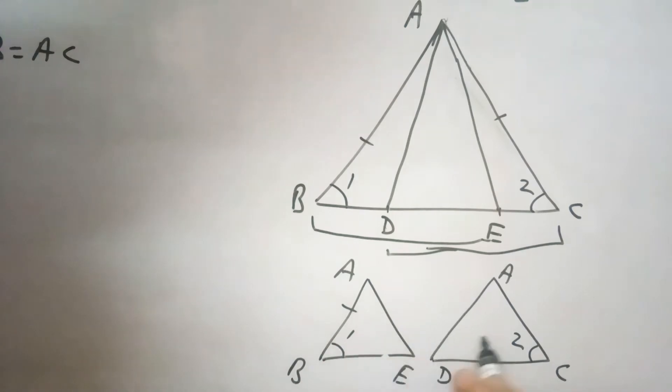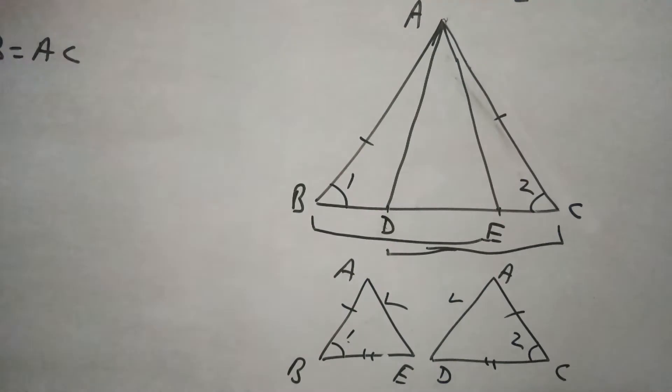Now here, because AB equals AC, angle 1 equals angle 2, and BE will be equal to CD. So by side angle side congruency, these two triangles are congruent, and then we can say that AE will be equal to AD. So this way we will prove this.